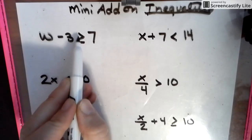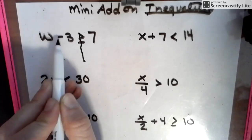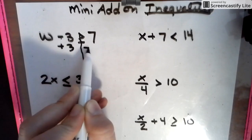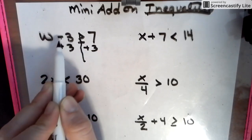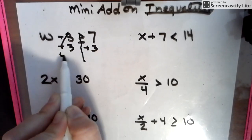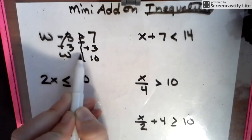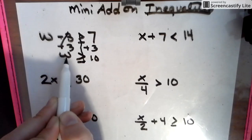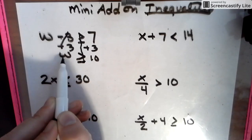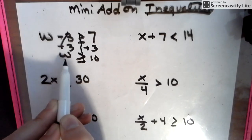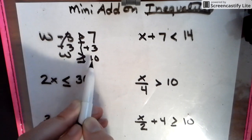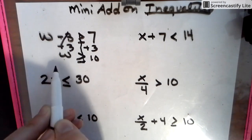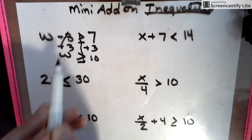So you still can draw that line down that piece, and when you see minus 3, you're going to add 3. Whatever you do to one side, you do to the other. You have a W and you have a 10, but you don't put an equal sign — you put that inequality sign, and this means any number greater than or equal to 10. So that means 10 and greater work for this.